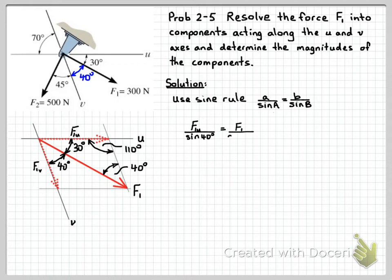So first, let's look at F1u. We have here F1u; the opposite angle is 40 degrees. So we have F1u over sine 40. And we know the length of F1 and the opposite angle there is 110.